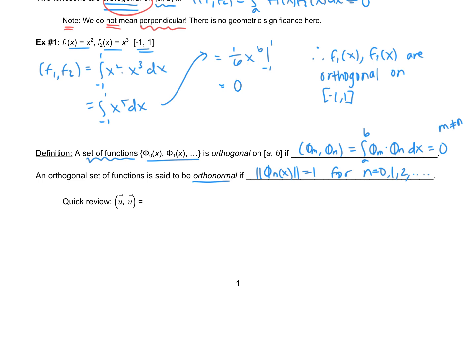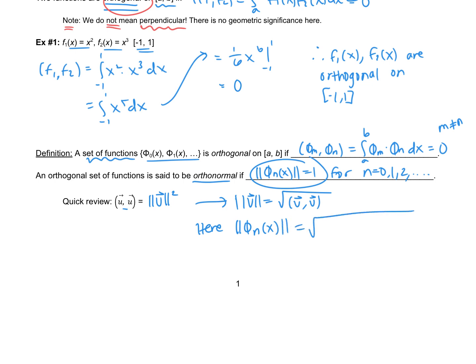A quick review: if we do the inner product of a function with itself, that's the same as the magnitude of that vector squared. So the magnitude of u is the same as the square root of the inner product of u with itself. This means the magnitude of φ_n(x) is the square root of the inner product of φ_n with itself. Now that we have all of this background, we're going to look at a few more complicated examples.